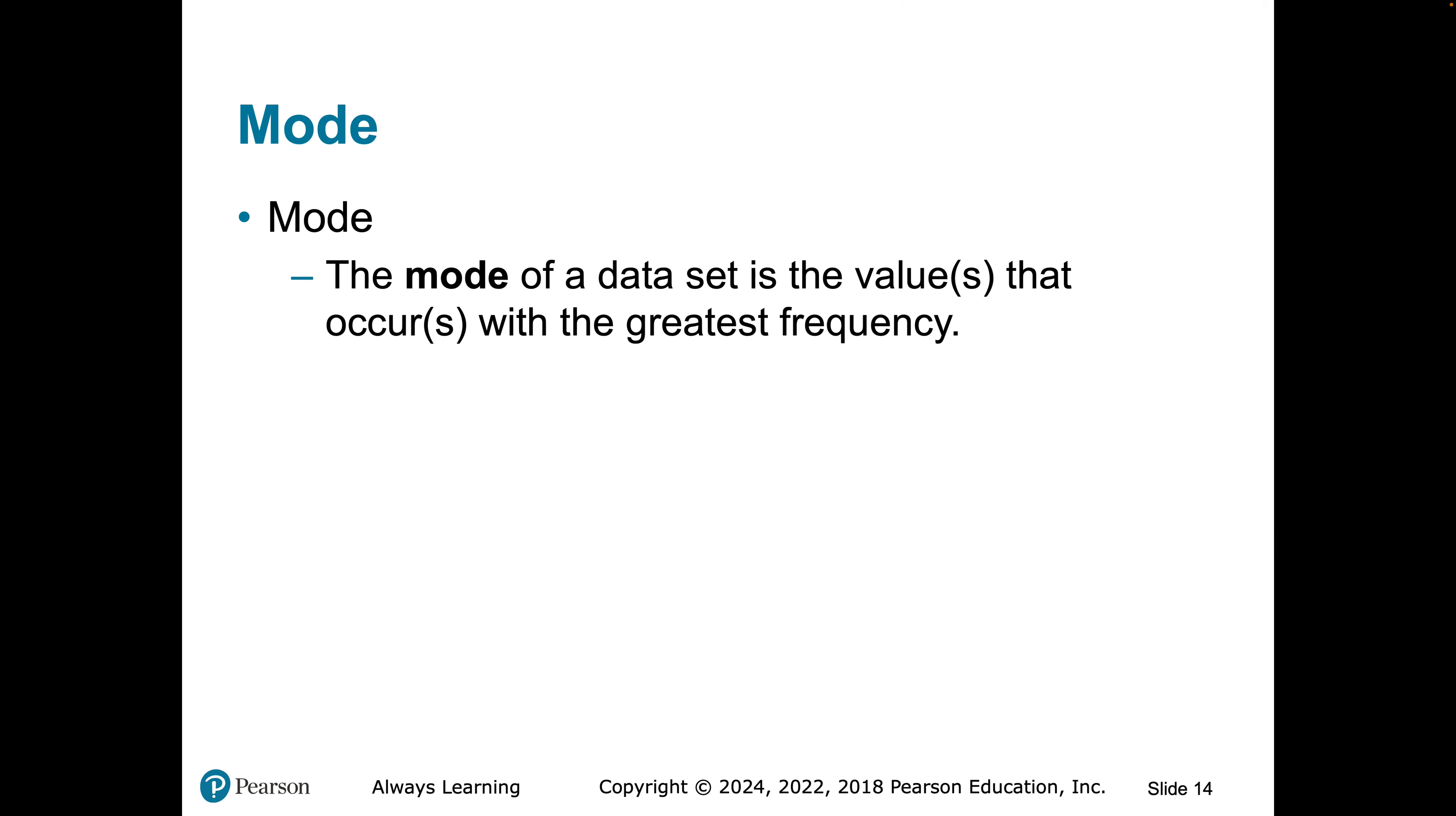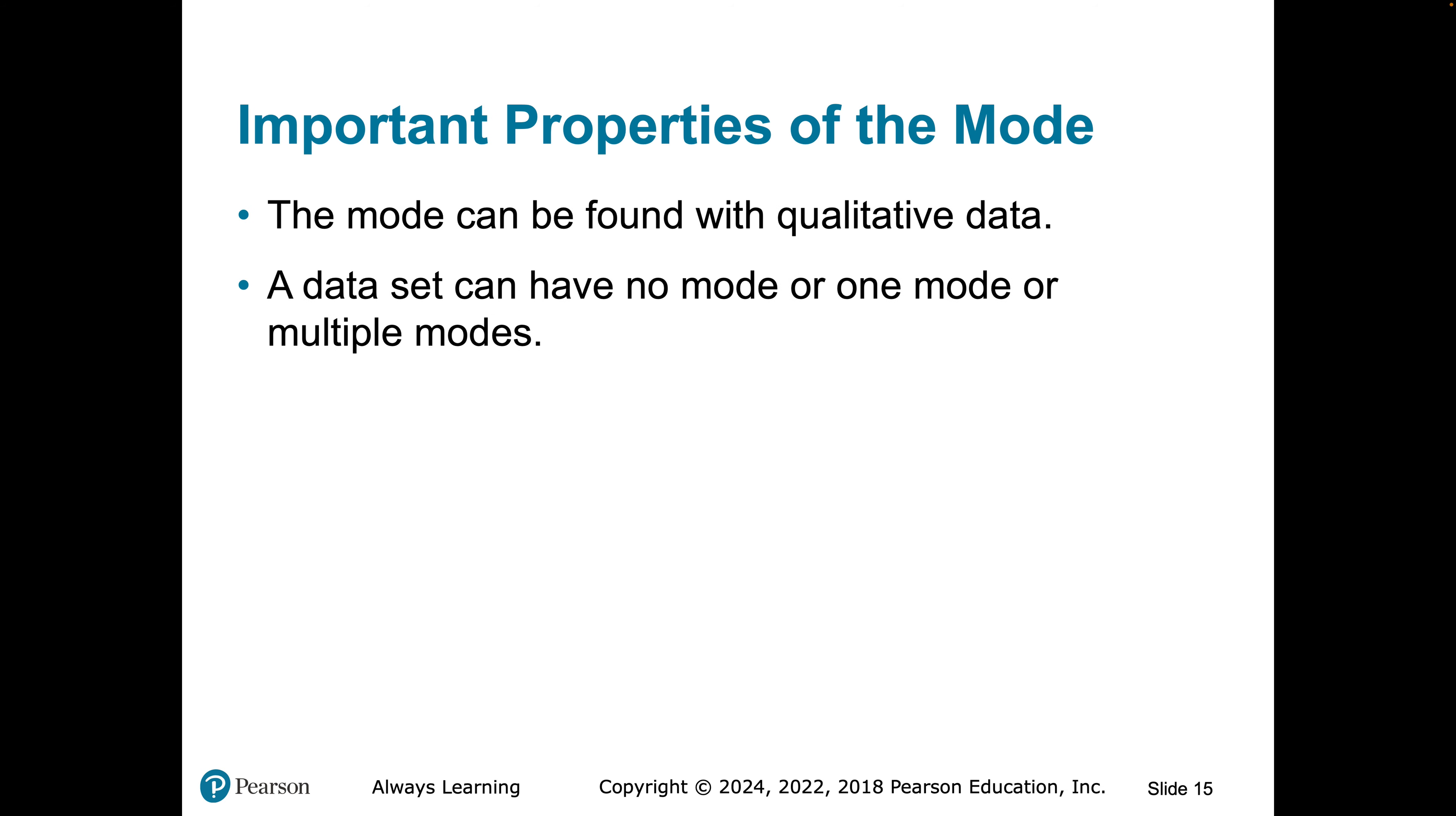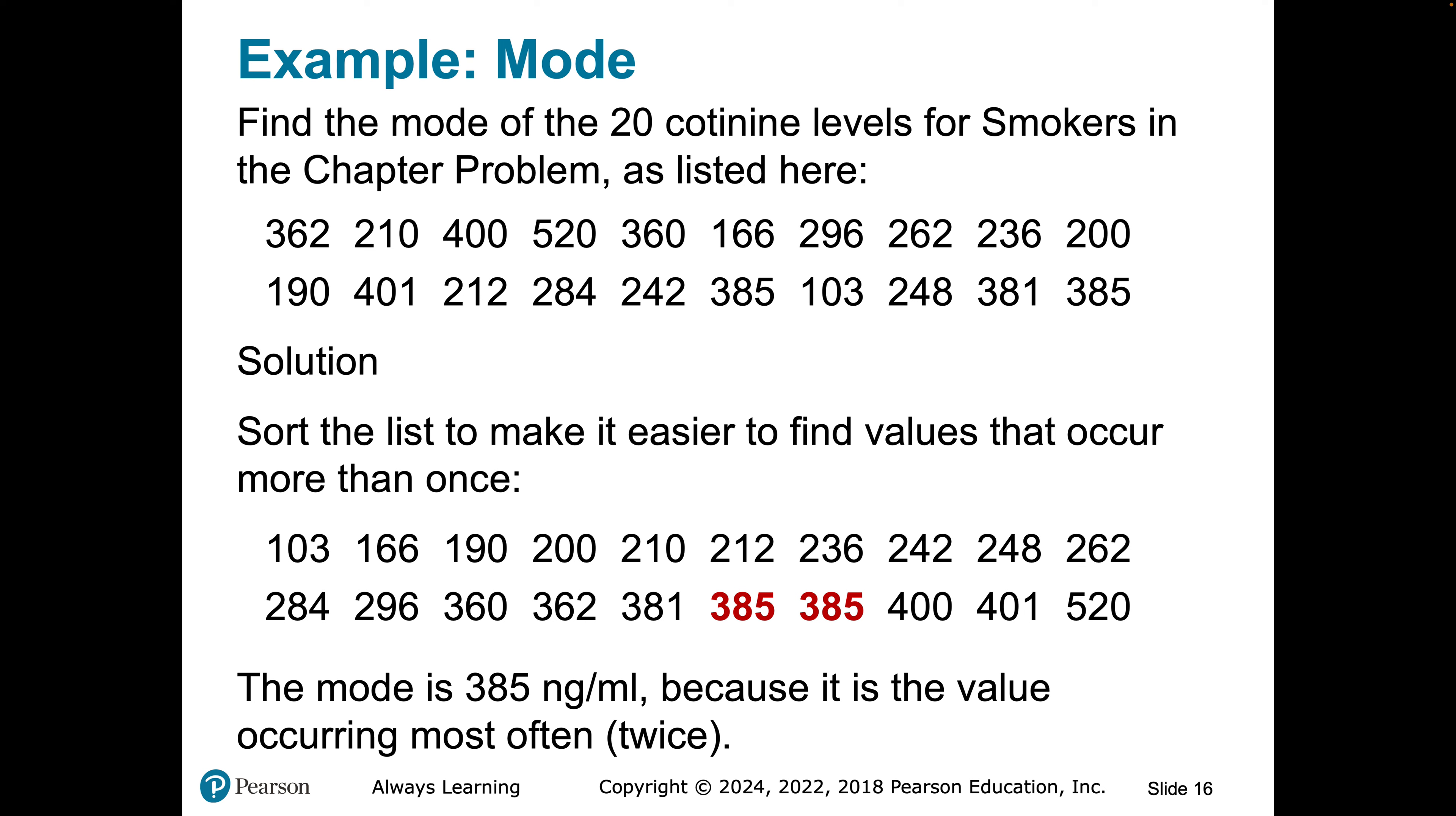The mode is the value that occurs the most. Again, I don't get into the mode much, but it's still something to kind of have on your radar and have it tattooed to the brain. So, we can either have no mode, one mode, or multiple modes. So, for the 20 levels that we have at the top, sometimes it makes it easier to find the mode if we arrange from low to high. Actually, it doesn't. It's kind of silly of me to say because if we want the mode, what are we going to do? We're going to plug it in technology and hit mode and it's going to spit out our mode. But anyway, I think a visualization of this is good.